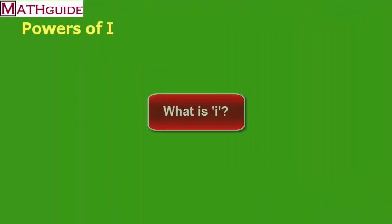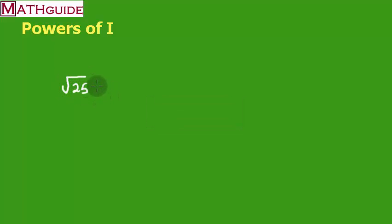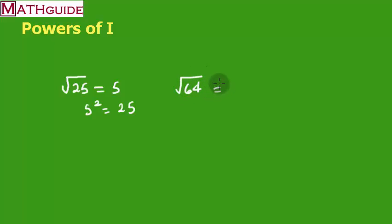Let's talk about what i is. If we have a problem like the square root of 25, we know it's 5 — because 5 squared is 25. So 5 times 5 is 25. We've got the square root of 64; it's 8, because 8 squared is 64. We know that we can take the square roots of some numbers — they're really easy to do.